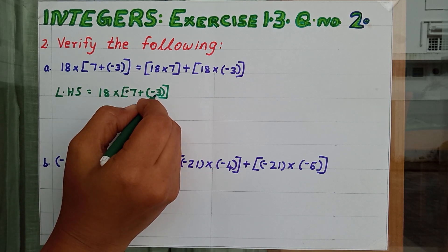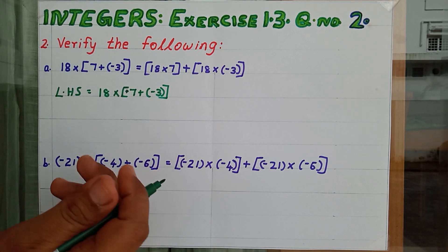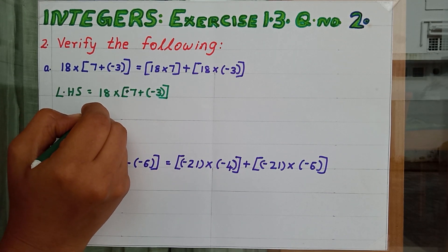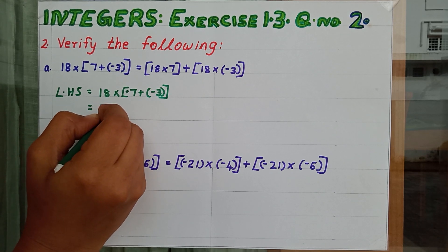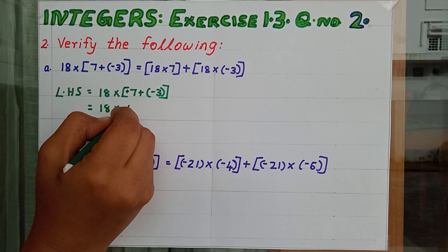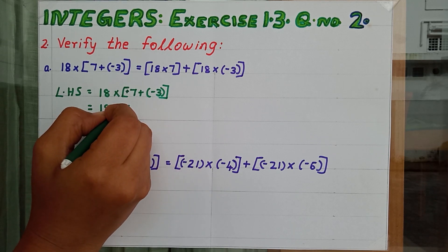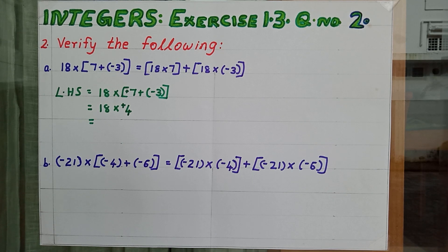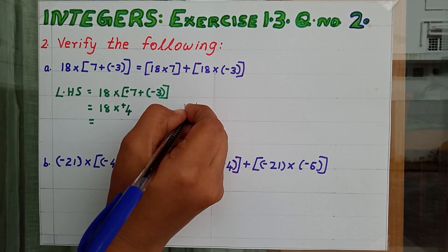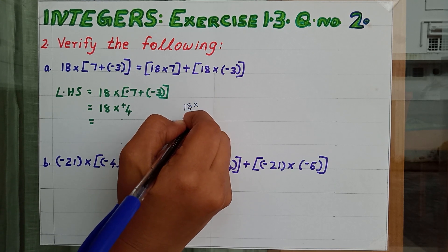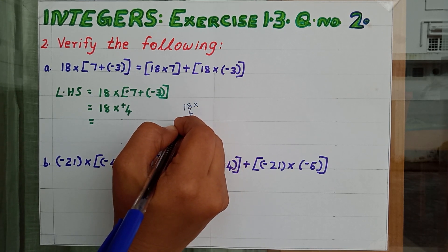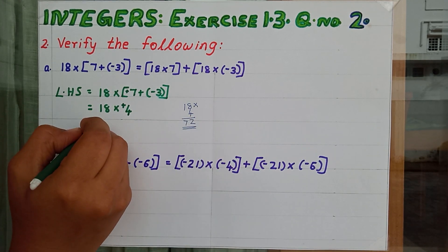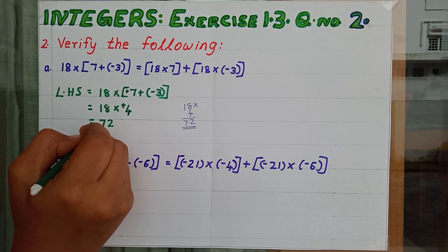7 is positive and 3 is negative. Both are of different sign. So just subtract and give the sign of the greatest number. That means 18 into, after subtracting we are getting 4. Then give the sign of positive equal to 18 into 4. So I can write LHS equal to 72.